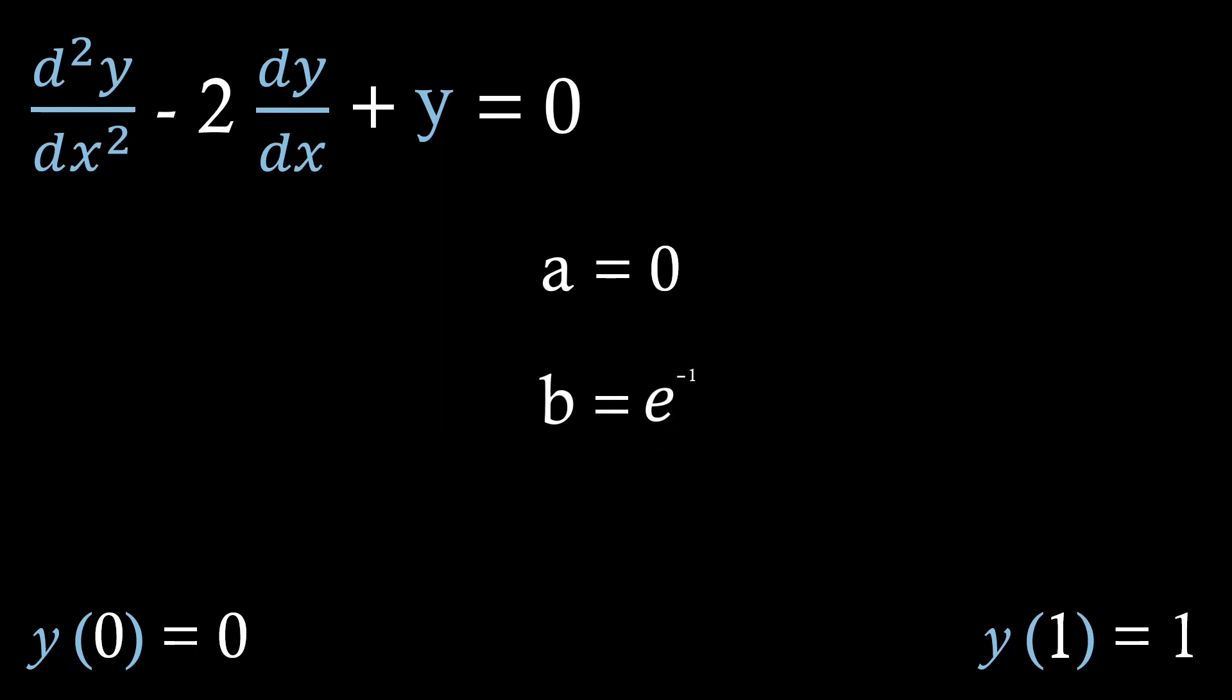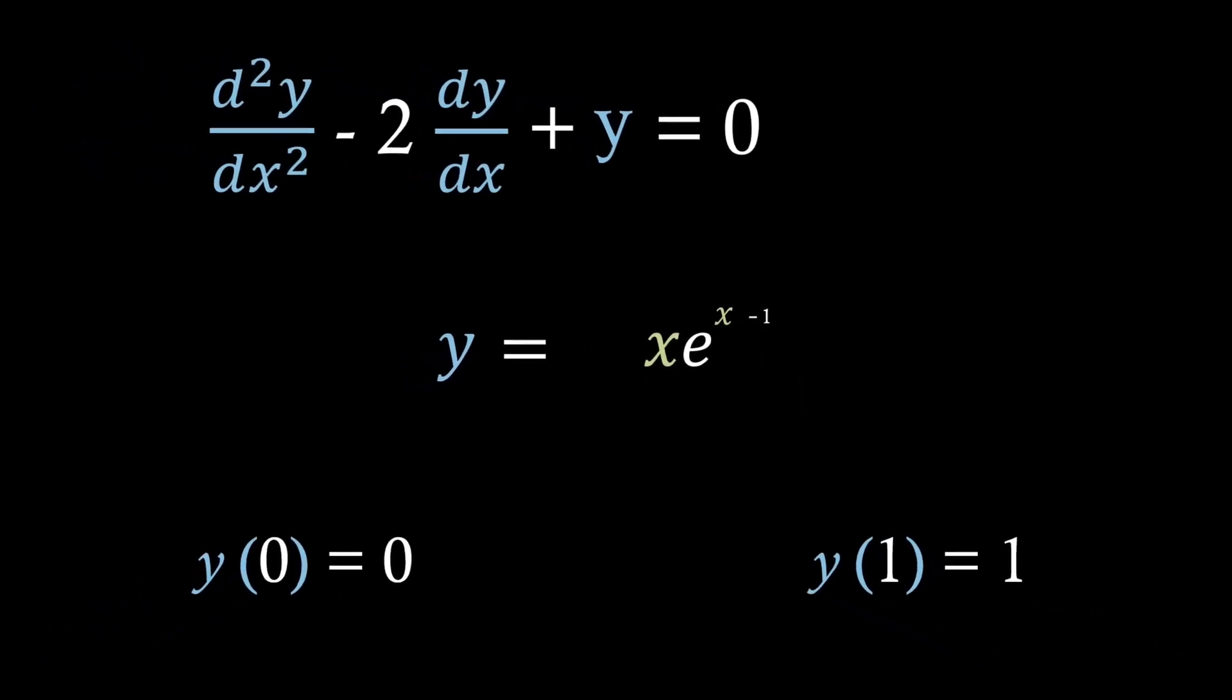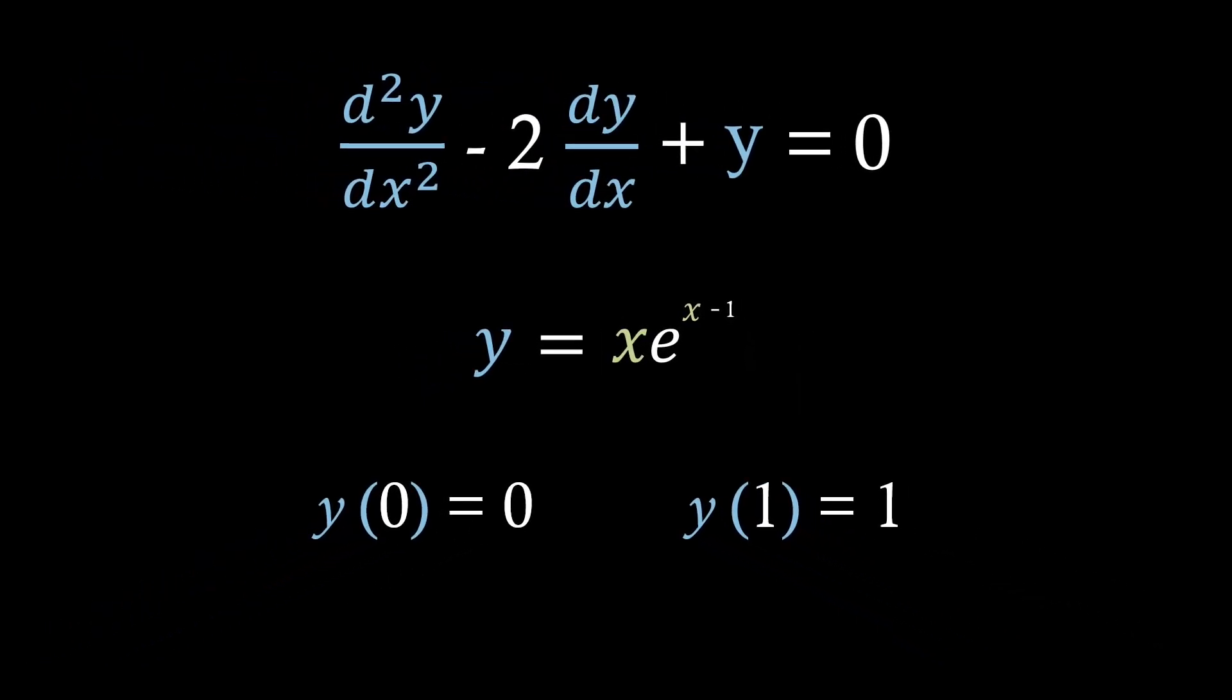This is another example where we haven't had to solve a simultaneous equation, as we've been given a and b quite easily. So we can now put these values back into our general solution to find our particular solution. And then simplifying, we'll find that y equals x times e to the x minus 1.